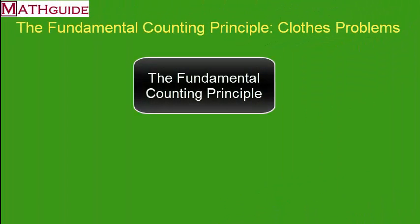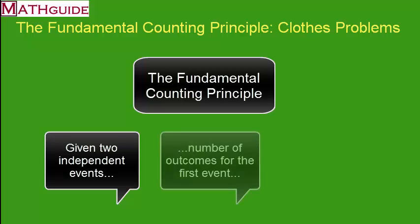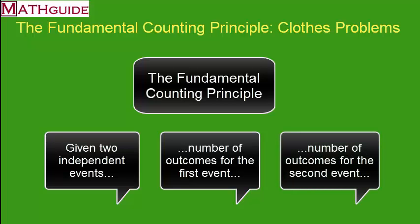Let's talk about the fundamental counting principle. If you are given two independent events and you know how many different possible outcomes there are for the first event and you know how many possible outcomes there are for the second event, it's easy to figure out how many possible outcomes there are for the total number. All you have to do is use a formula.